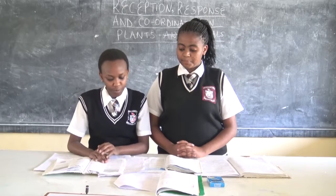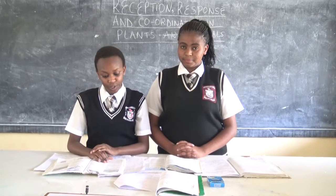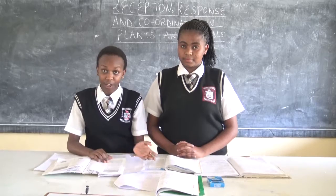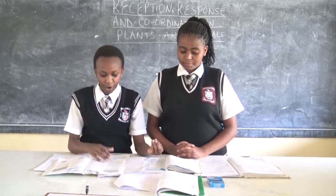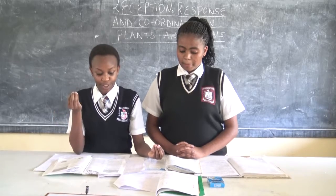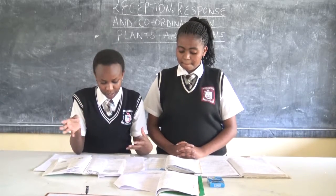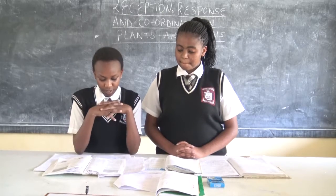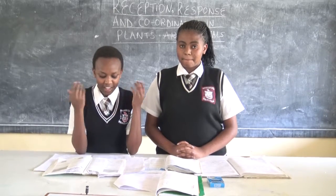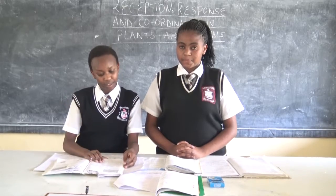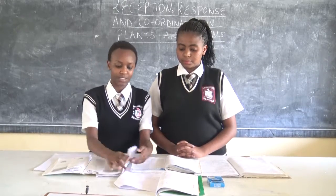Tropism is the growth movement of a part of a plant in response to a unidirectional external stimulus. These growth movements are often slow because the growth rate is controlled by plant hormones.